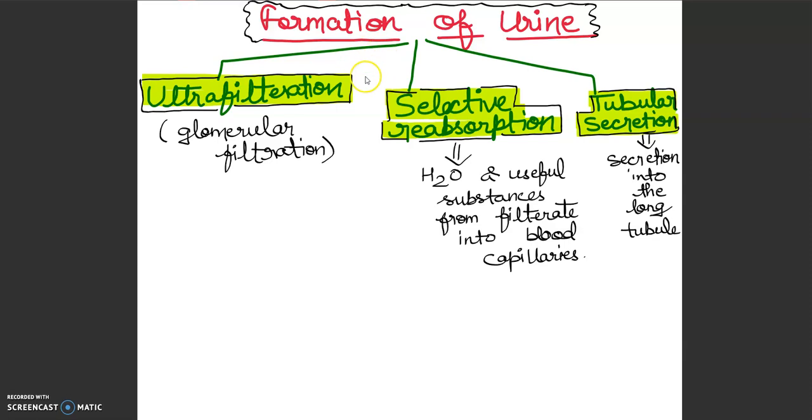Actually urine formation takes place in nephron and it involves three basic steps: first is ultrafiltration, second is selective reabsorption, and third is tubular secretion.